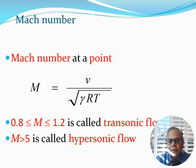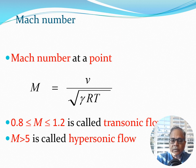Mach number greater than 5 is hypersonic flow, which occurs in certain missiles and high-speed weapons. Hypersonic flight is an active area of research that we will discuss briefly later in the course.